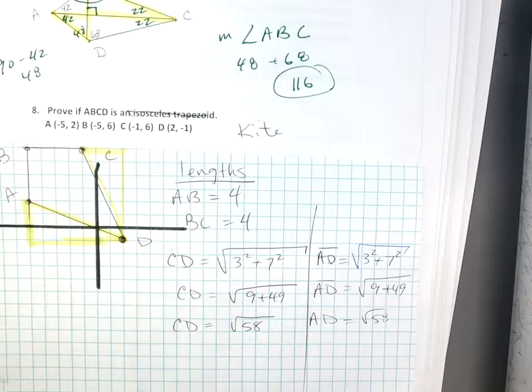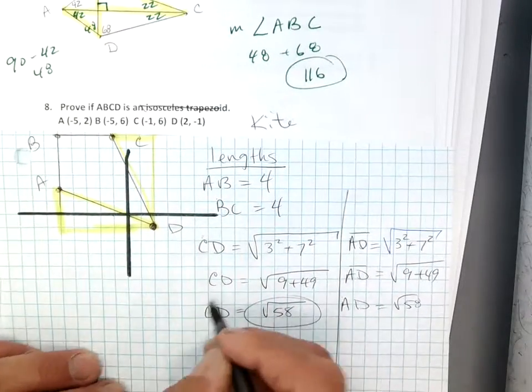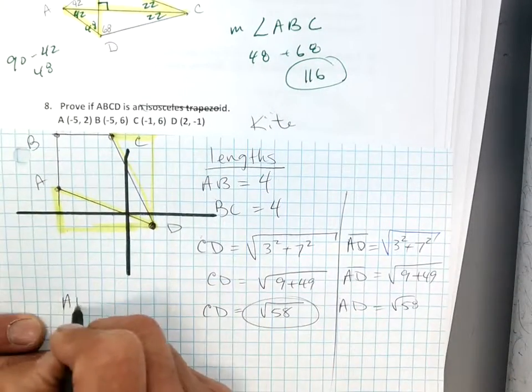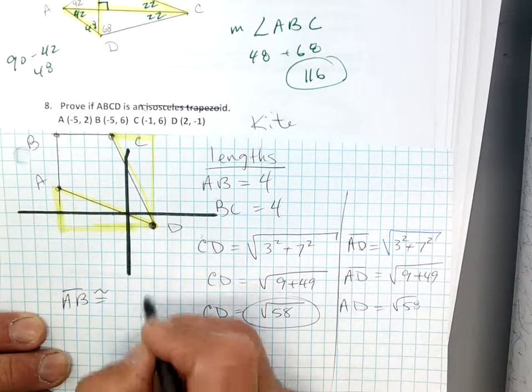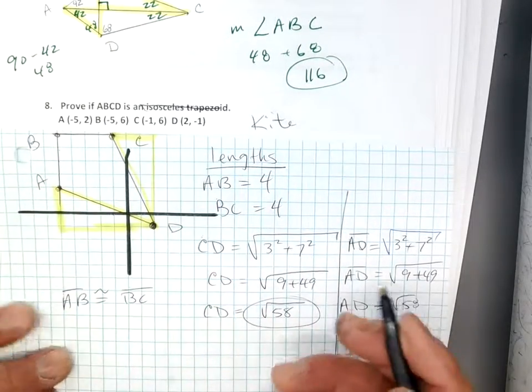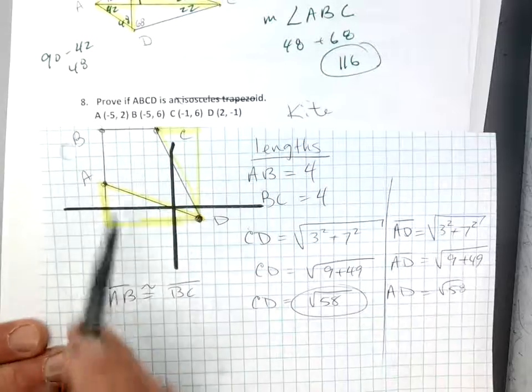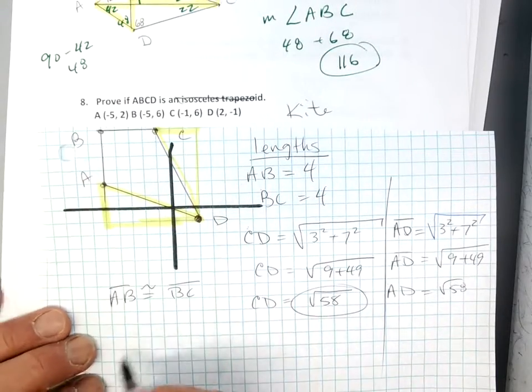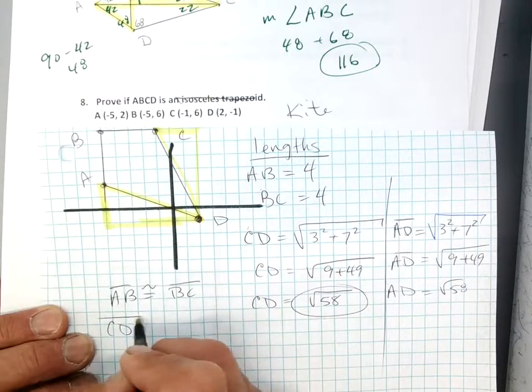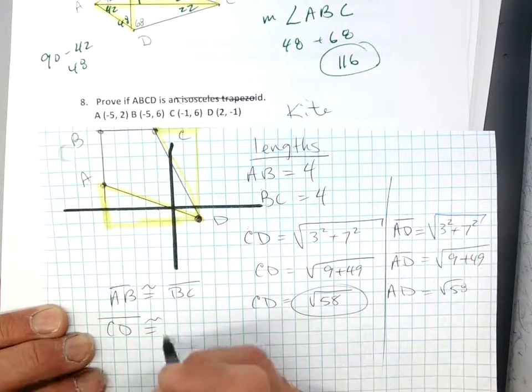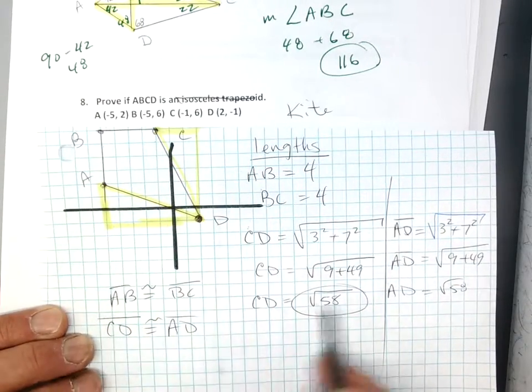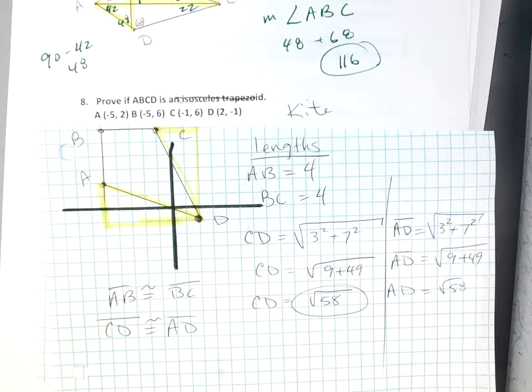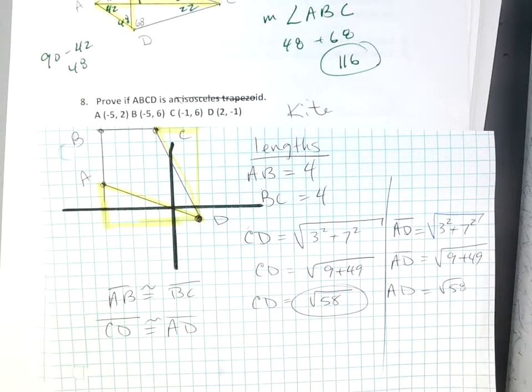So now I know it's a kite, because I've proven it. I can say that A, B is congruent to B, C, because they're both four, right? So I'm saying these two are equal, they're equal, these two are equal because they're both four. And I can say that C, D is congruent to A, D, because they both have a length of the square root of 58. Oh, whatever the decimal that is, blah, blah, blah, blah. So it must be a kite, so I can say that A, B, C, D is a kite.